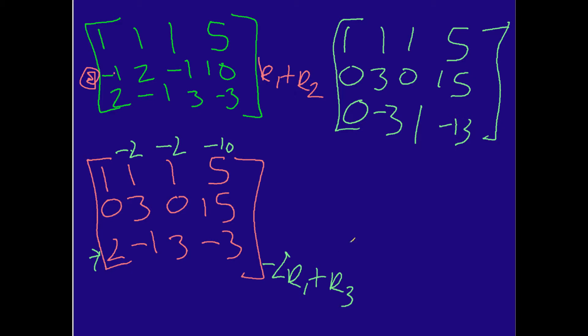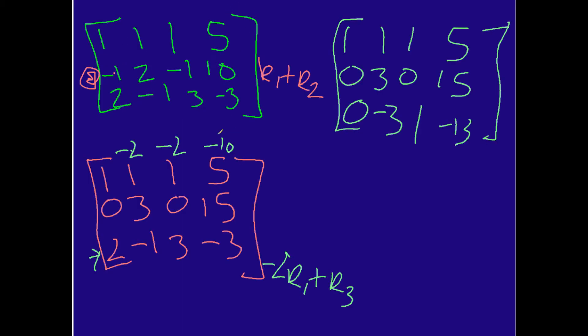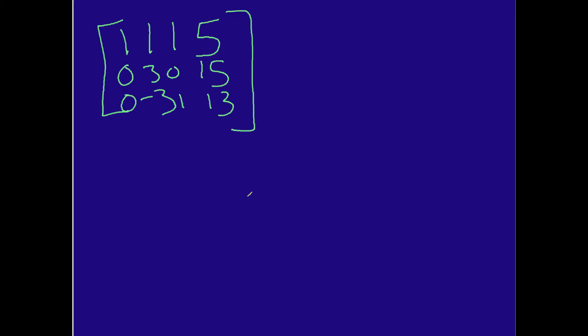So I'm going to take this and move to another slide. So here's what we have now: we have 1, 1, 1, 5, and then we have 0, 3, 0, 15, and now we have 0, negative 3, 1, and negative 13. I know my handwriting is not the greatest, but you get the point. That looks about right.